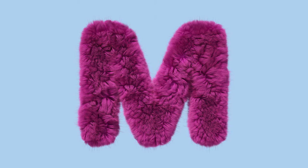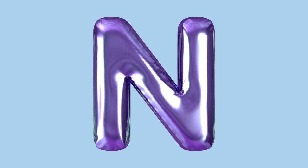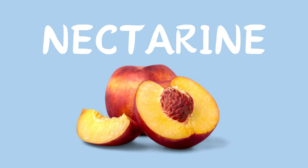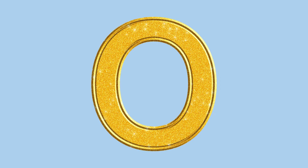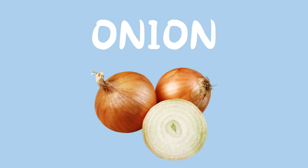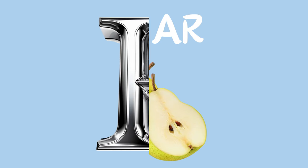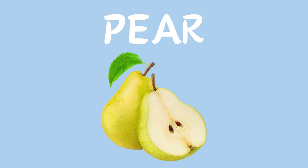M is for Mushroom. N is for Nectarine. O is for Onion. P is for Pear.